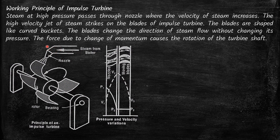From the nozzle, a high velocity jet ejects momentum onto the blade of the turbine. As it impinges on the blade of the turbine, momentum transfer takes place and the blade gets momentum to rotate.